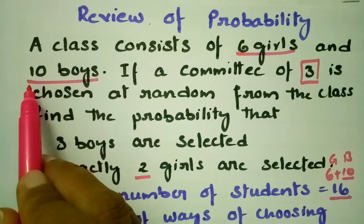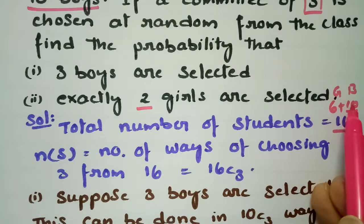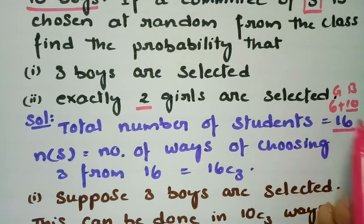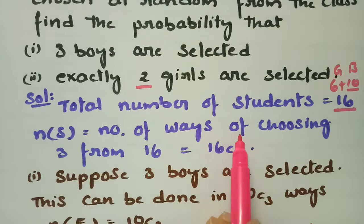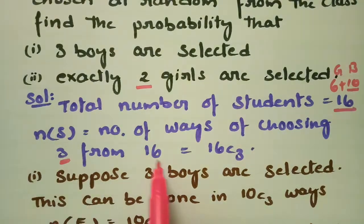Total students are 6 plus 10, that is 16. The total number of students is 16. n(S), the number of ways of choosing 3 from 16, is 16C3.